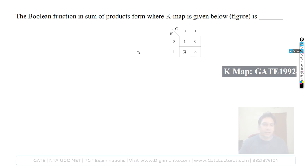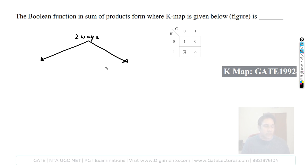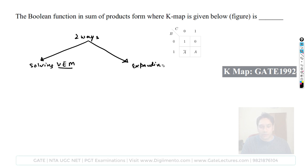Method one: solve using the variable entrant map concept. Method two: expand all the terms. Let me explain both. First method — using the variable entrant map: I create the same map. First, I take A and A-complement both as zero and find the SOP with variables B and C.